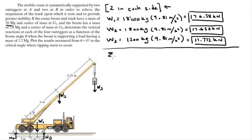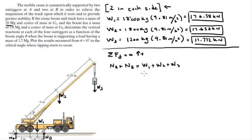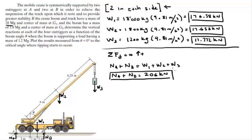Now, sum of forces in the Y direction equals zero — this is statics after all. Assuming up is positive: the normal at A plus the normal at B equals W1 + W2 + W3, which comes out to be about 206 kN. So we've got our first equation.